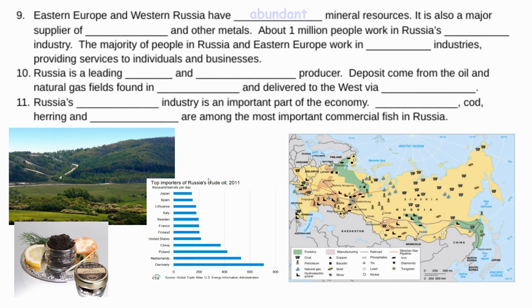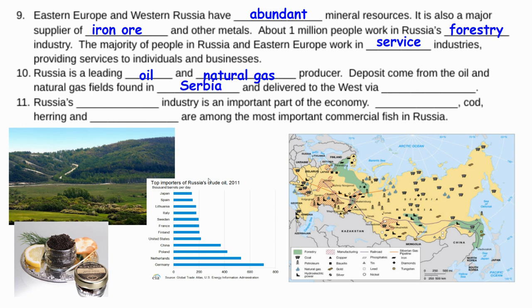In Eastern Europe and Western Russia, they have abundant mineral resources, and the region is also a major supplier of iron ore and other metals. About a million people work in Russia's forestry industry. The majority of people in Russia and Eastern Europe work in service industries. Russia is a leading oil and natural gas producer, with deposits coming primarily from oil fields around Siberia, delivered west via pipelines.